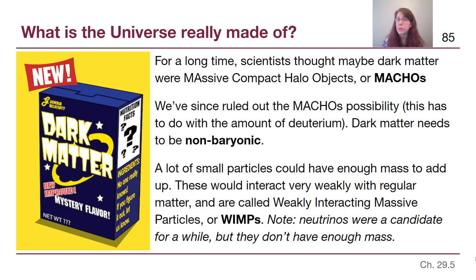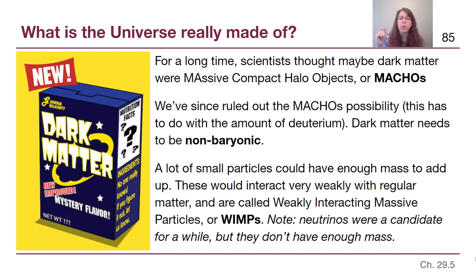Instead, dark matter actually needs to be non-baryonic. Baryons refer to protons, neutrons, and electrons — the standard particles that build all of the stuff around you. Non-baryonic means it's a particle outside of that set. For a while, neutrinos were thought to be the answer. But we need a lot of really small particles that have enough mass to just exist and interact very weakly with regular matter — otherwise they'd be easy to find. So they're called weakly interacting massive particles, or WIMPs.